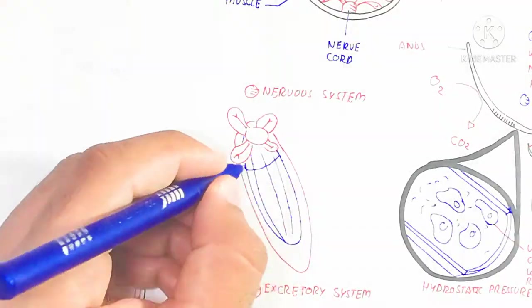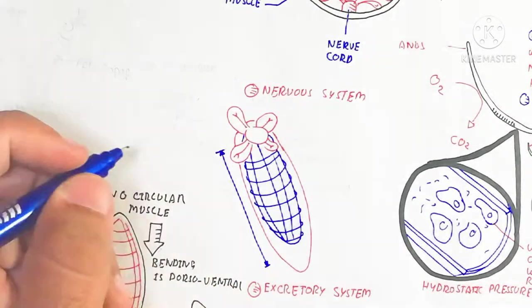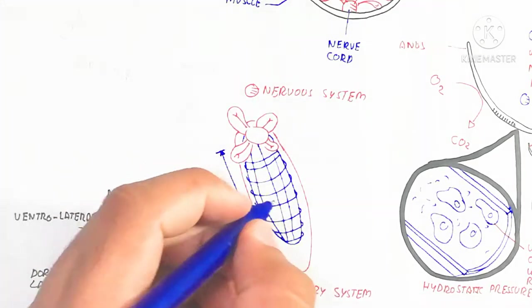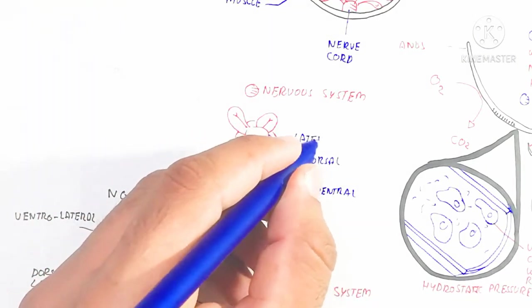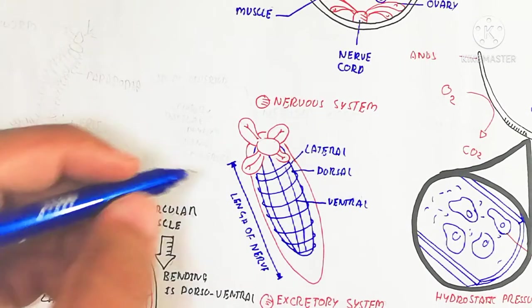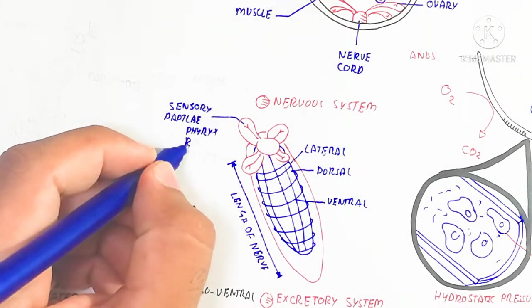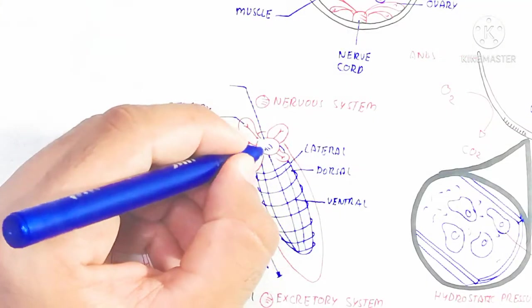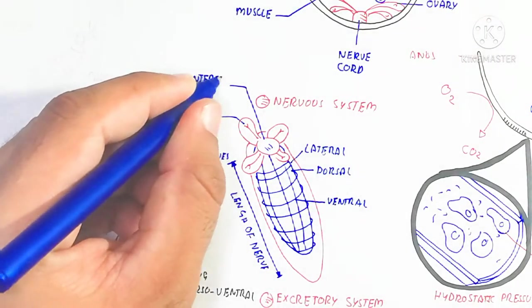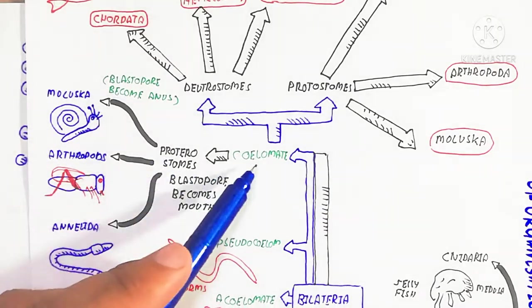Nematode means pointed ends at both sides. The nervous system contains sensory papillae and a pharyngeal ring of nerves. Lateral, dorsal, and ventral nerves are present. The lip at the anterior contains four sensory papillae. The central nervous system is not well developed but is slightly developing, evolving toward a more developed nervous system.